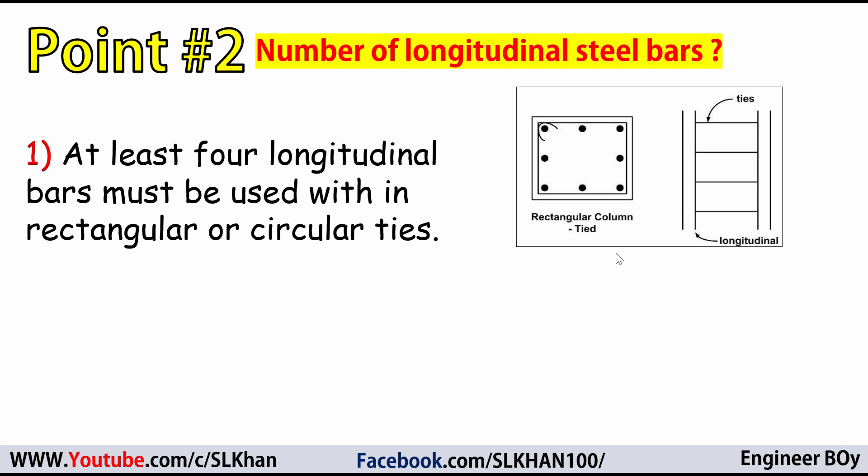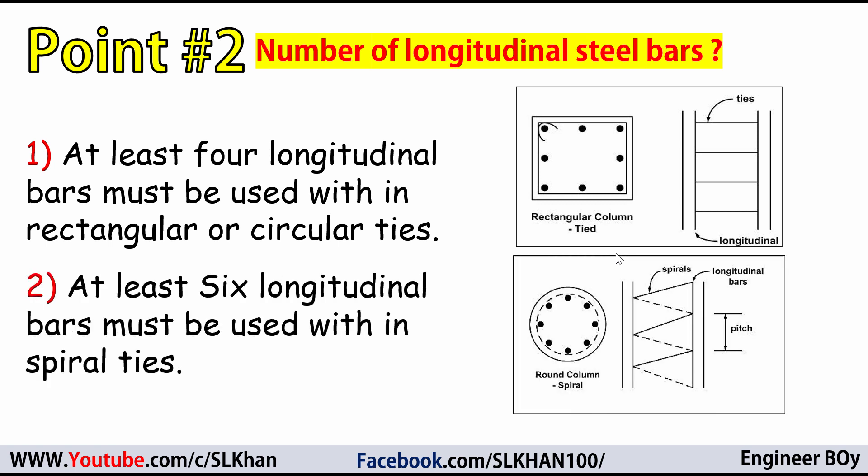At least 6 longitudinal bars must be used within spiral ties. For hexagonal ties, since a hexagon has 6 vertices, at least 6 bars must be used. For octagonal ties, the minimum number of longitudinal bars is 8. For any shape with more than 4 vertices, the number of bars corresponds to the number of vertices.